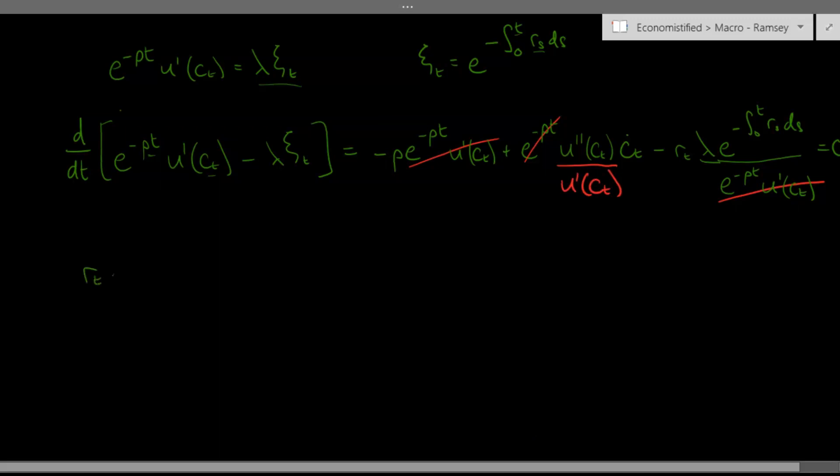So just rearranging this expression slightly, we get that rt minus rho is equal to the negative of u double prime ct over u prime ct times ct dot.